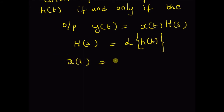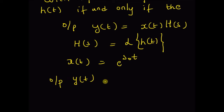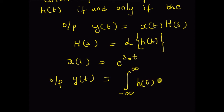Given the input x(t) = e^(s₀t), then the output y(t) is equal to, by definition, the integral from minus infinity to plus infinity of h(τ) multiplied by x(t − τ) dτ.